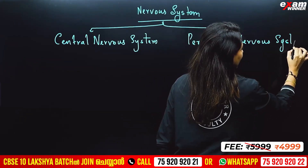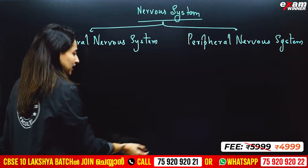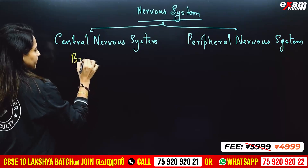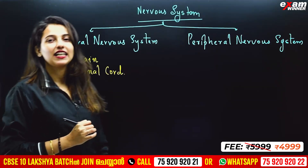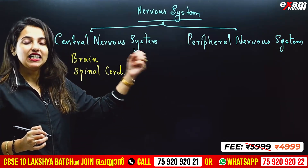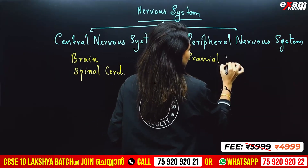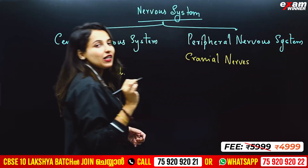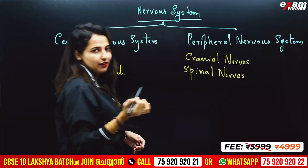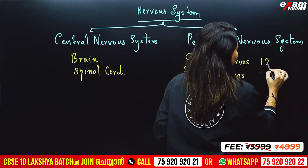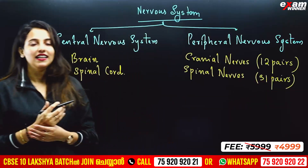We have two nervous systems. The central nervous system consists of the brain and spinal cord. From the brain arise the cranial nerves, and from the spinal cord arise the spinal nerves. We have 12 cranial nerves and 31 spinal nerves. This forms the Peripheral Nervous System.